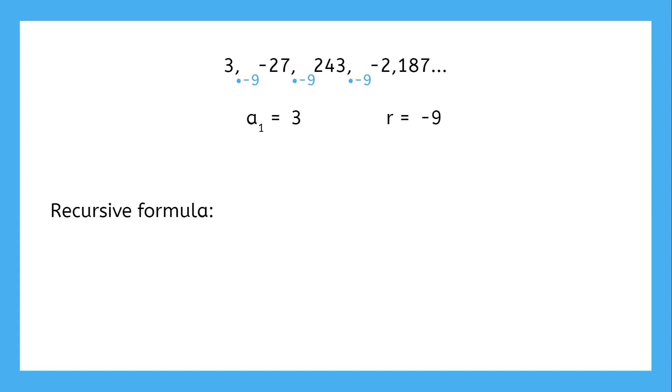Now we've got everything we need to write the formula. The common ratio is negative 9 and the sequence starts at 3.